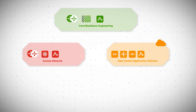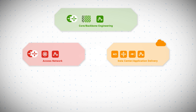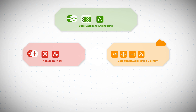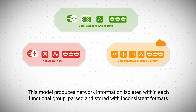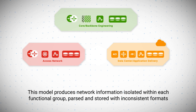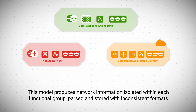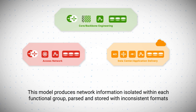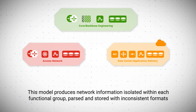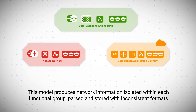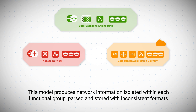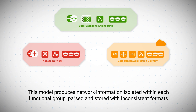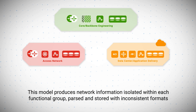So this is where the problem begins. This model produces disparate network information isolated within each functional group, parsed and stored within inconsistent formats, and secured within local team boundaries. Each group effectively becomes a data island unto itself, stranding critical network state information, making it unportable and not reusable by enterprise-wide automation routines.